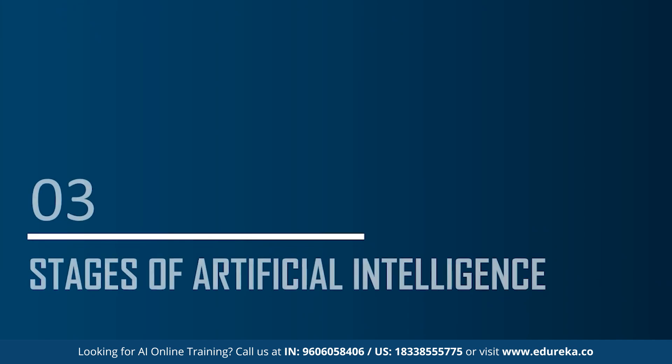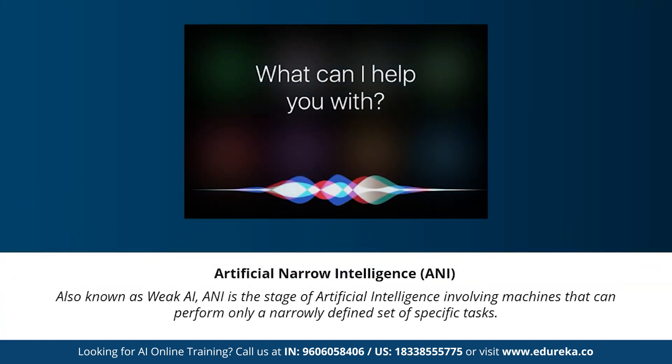Now let's understand the different stages of artificial intelligence. Many videos and articles state that artificial general intelligence, artificial narrow intelligence, and artificial super intelligence are the different types of AI. To be more precise, artificial intelligence has three different stages, and the types of AI are completely different from the stages of AI. Under the stages of artificial intelligence we have: artificial narrow intelligence, artificial general intelligence, and artificial super intelligence.